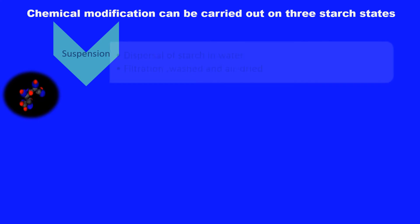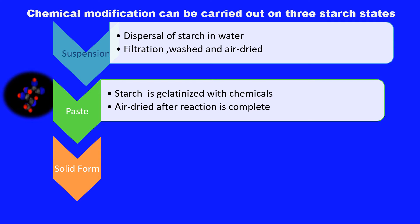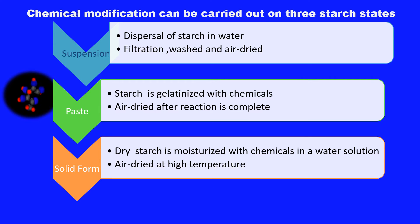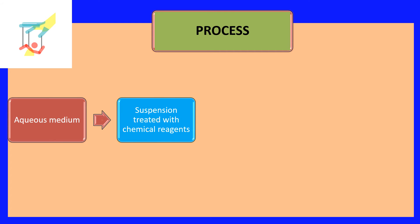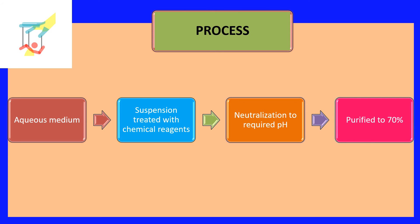These chemical reactions can be carried out on three different starch states. First, the starch can be made into a suspension — a slurry by dispersing starch in water — which is then filtered, washed, and dried. Second, a starch paste can be formed by gelatinizing starch with chemicals and then air drying. Third, a solid form where dry starch is moisturized with chemicals in a water solution and then air dried. In all cases, the general process involves treating an aqueous suspension with chemical reaction, neutralizing to the required pH, and then purifying.